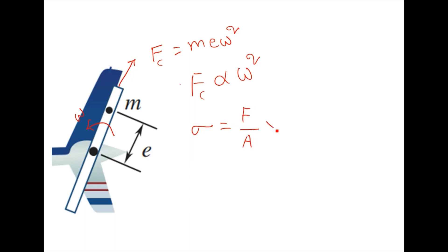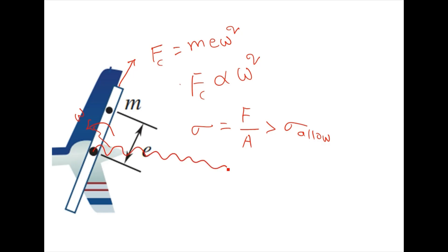The internal stress is F divided by A, and if this exceeds the allowable stress of the material, the blade can fail. This might be one of the reasons for what happened in Munna's helicopter. Even if this force is not sufficient to break the part, it will generate vibrations on the supporting bearing, which in turn can also vibrate the tail section of the helicopter.